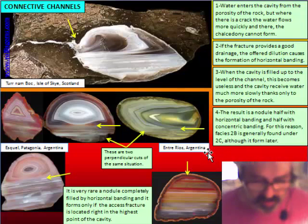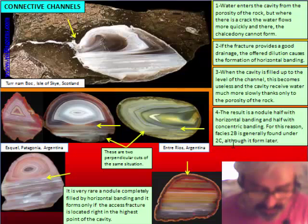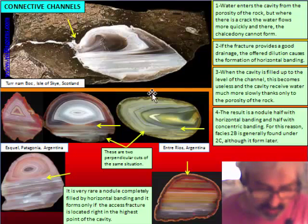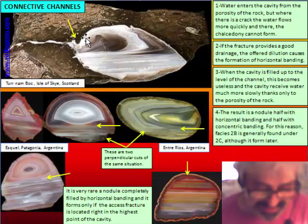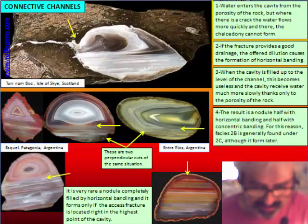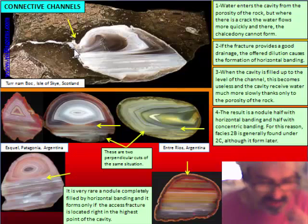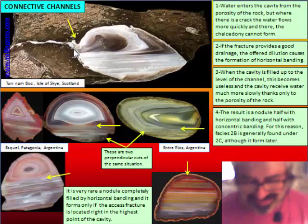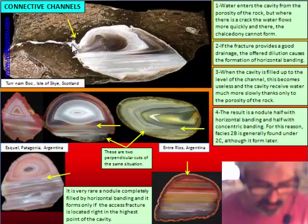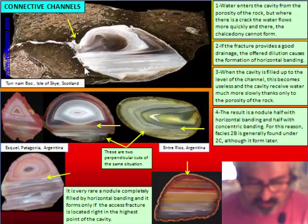Where do the interruptions of the banding and the connective channels appear? In most cases it is possible that the channel corresponds to a fracture in the host rock. We see here there is an interruption of the band. This is an agate from Scotland. In its host rock, which is a basalt, we see a fracture filled by chalcedony that was the axis of water entry inside the cavity. This is the more common case where the fracture crosses the cavity from the lateral side. It can be a little bit higher or lower, but more often the fracture arrives at the cavity from one side.